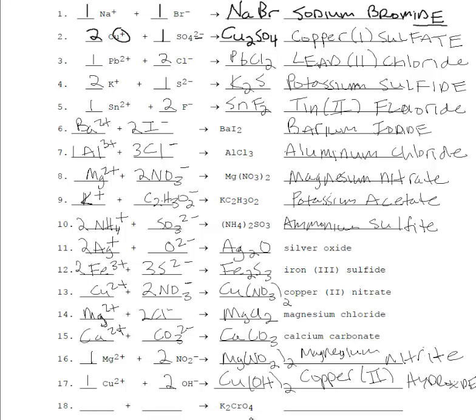All right, we've got K2CrO4. Well, K is always plus. CrO4 is minus two. We've got two Ks. And we can write this down as potassium chromate. You can look that up in your polyatomics.